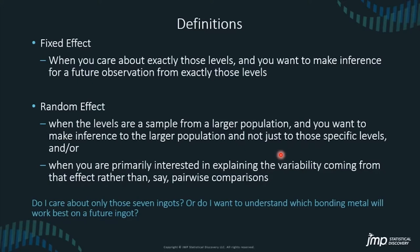Also, with a random effect, you're primarily interested in explaining the variability coming from that effect. You don't care whether ingot one had stronger bonding strength than ingot two — it's just a source of variability within the experiment that you need to account for, so that your inferences about the metals used for the bond itself are correctly accounted for.